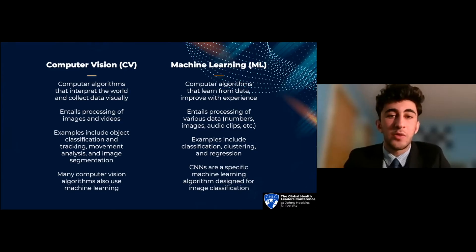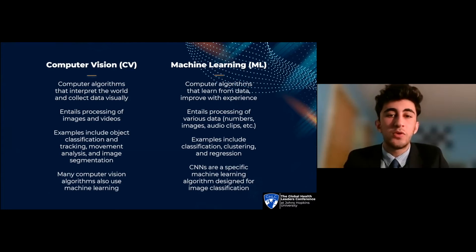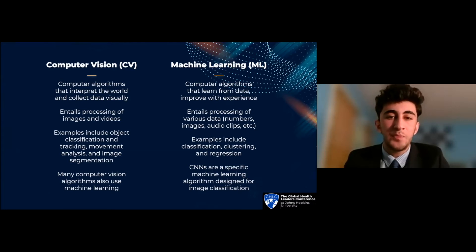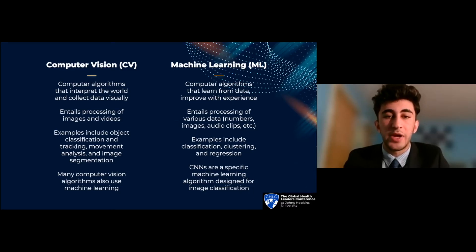Many computer vision algorithms also use machine learning, which is a wider-ranging class of algorithms in which computers learn from data and improve with experience. Machine learning is used in a wide variety of fields to classify, cluster, and predict outcomes based on input information. This ability makes it a key partner to the data produced by computer vision.